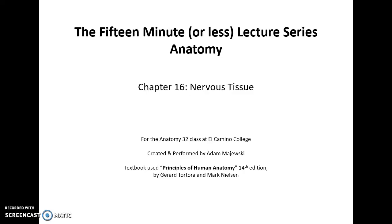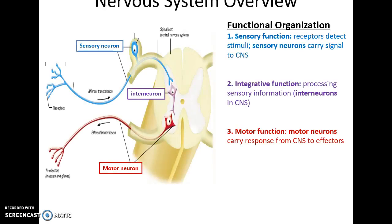The nervous system is organized functionally in three main parts. There is the sensory function — these are the receptors that detect stimuli in our environment or inside our bodies — and then sensory neurons carry that information to the central nervous system. Then there's the integrative function, which is the processing of the sensory information and deciding what, if anything, to do about it.